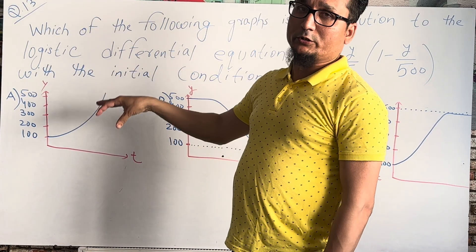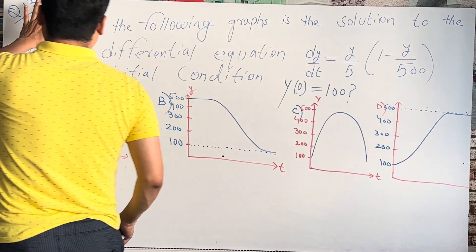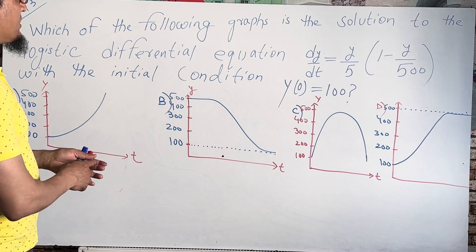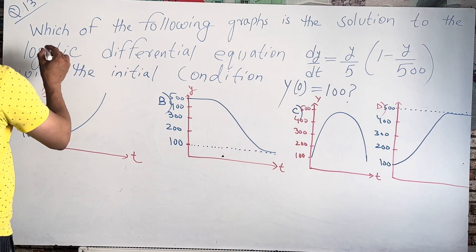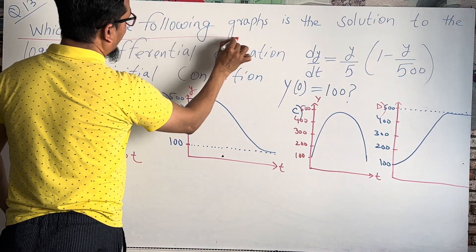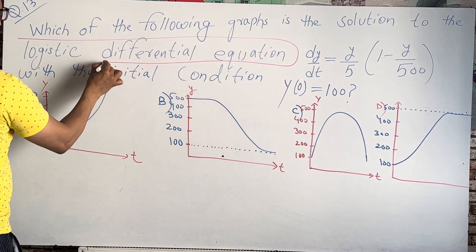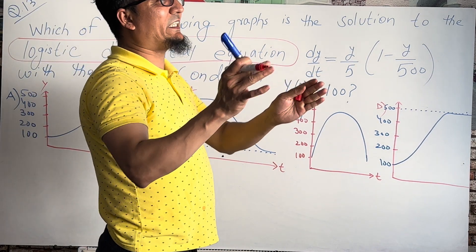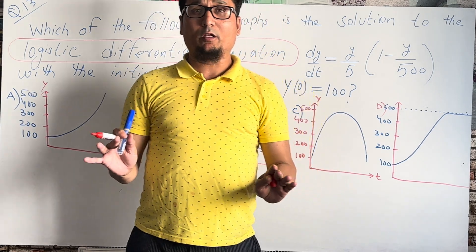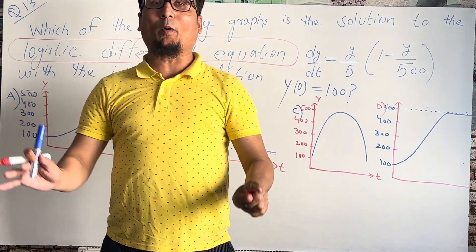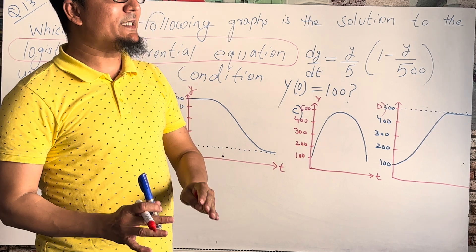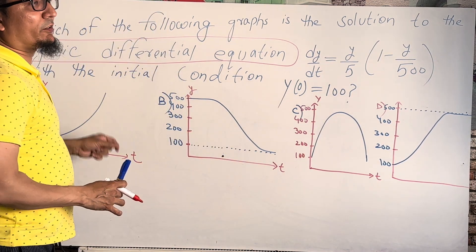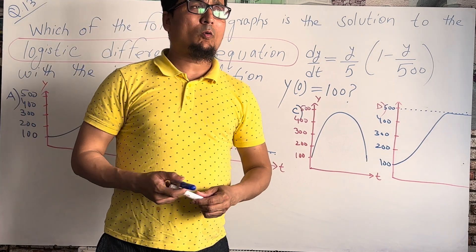Question number thirteen asks: which of the following graphs is the solution to the logistic differential equation? There is a keyword here — logistic differential equation. When you see dy/dx in any equation, it means that this is a differential equation. But what is the meaning of the logistic differential equation?